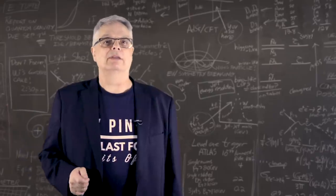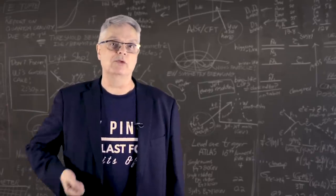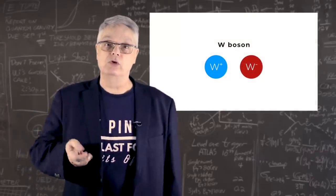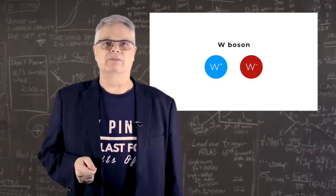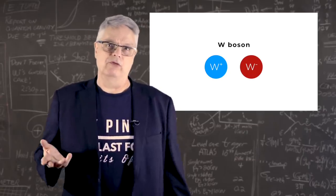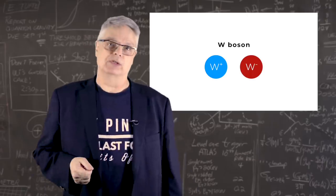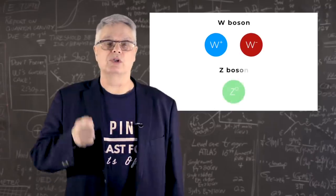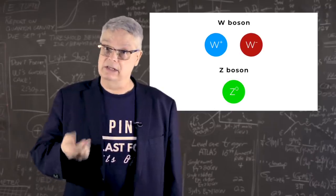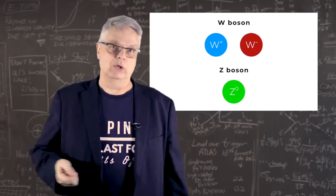The W boson is one of the particles that transmit the weak nuclear force. It comes in two versions with an electric charge of plus one and the other negative one. We don't distinguish between the two variants, so we just say the W boson. The other particle that transmits the weak force is called the Z boson. It is electrically neutral, which means there is only one version of it.